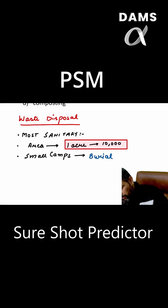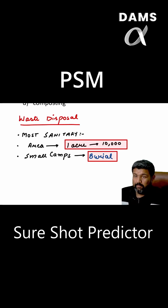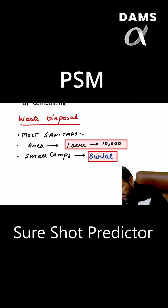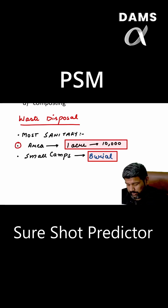These are your three FMG questions: the most insanitary method is dumping; the method suitable for small camps is the burial method; and the area required is one acre for 10,000 population.